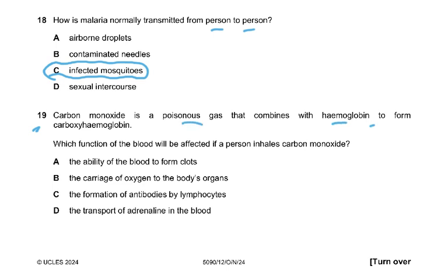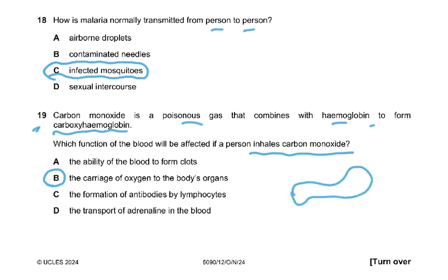Question 19: carbon monoxide is a poisonous gas that combines with hemoglobin to form carboxyhemoglobin, which is a stable compound. Unlike oxyhemoglobin, which is unstable and releases oxygen in body tissues, carboxyhemoglobin cannot release oxygen. This affects the carriage of oxygen to body cells, because the hemoglobin is permanently bound to carbon monoxide and cannot carry oxygen.